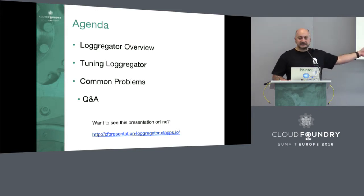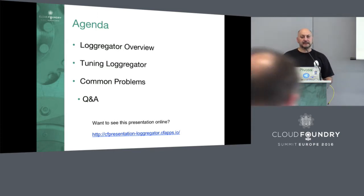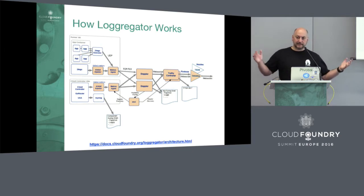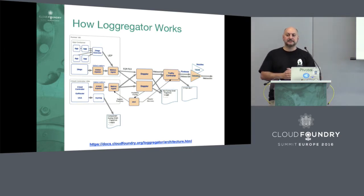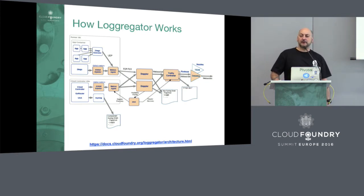Because everything's better as a CF app, this presentation is actually pushed — you can go look at it live there on that URL. So to kick it off, how does LoggerGator work? It works just like this. This is the boxes and lines diagram of our architecture document.